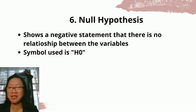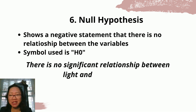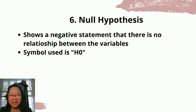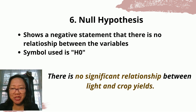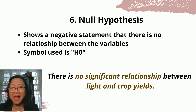The sixth type is null hypothesis. It shows a negative statement that there is no relationship between the variables, and we use the symbol H0. Example: there is no significant relationship between light and crop yields. Light is the independent variable and crop yields is the dependent variable. This is an example of null hypothesis.